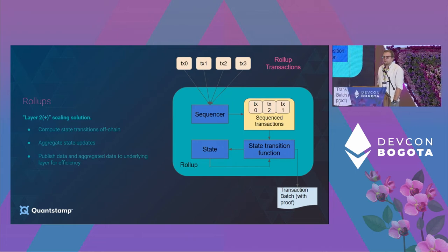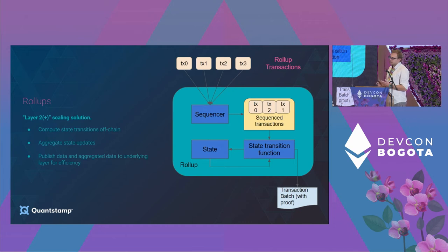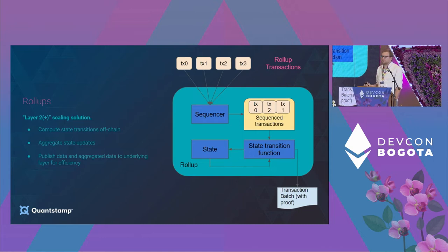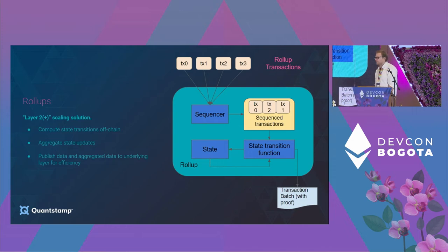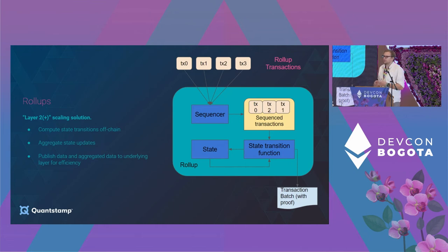So what is a rollup? If you've attended a lot of these talks here at DoveCon or elsewhere, you see a bunch of more or less mutually consistent definitions. Essentially it's some sort of layer 2 scaling solution — or maybe layer 3 or layer 4 if you're really forward-thinking — a system that takes transactions, executes them off-chain, batches and compresses them, and pushes some data onto layer 1. It's replicating your layer 1 blockchain like Ethereum, but doing it elsewhere with some nice advantage that gives you scalability or savings.